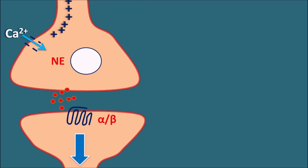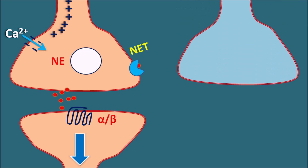The action of released norepinephrine is controlled by reuptake into the nerve terminal via the norepinephrine transporter (NET). This reuptake transporter takes norepinephrine back into the nerve terminal, terminating its action. Through the NET, released norepinephrine is reuptaken and its effect is terminated.